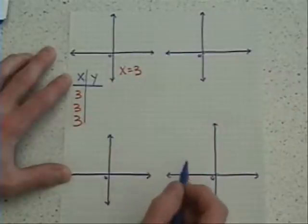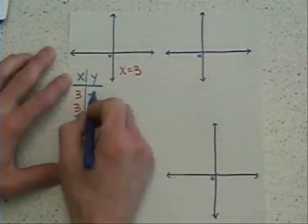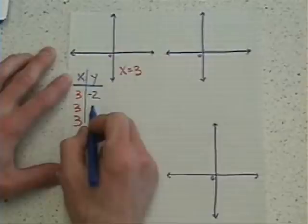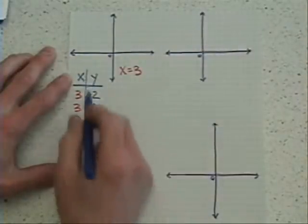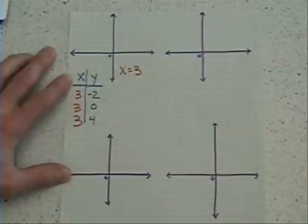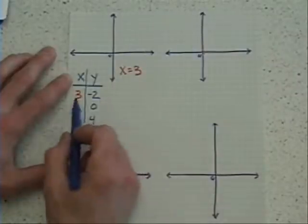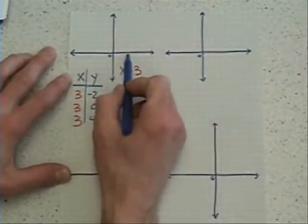Now the y values, it really doesn't matter what numbers I choose. I might choose a negative 2, maybe a 0, maybe a positive 4. It doesn't really matter what the numbers are on this side, because when I ultimately go to graph them, 3 negative 2 will be 3 over and 2 down.